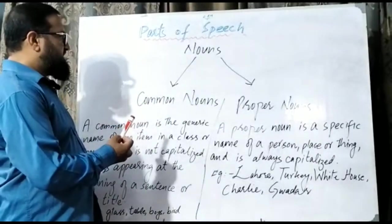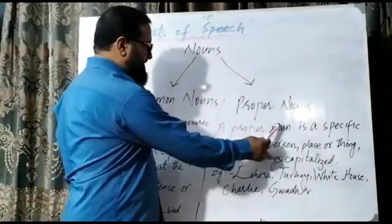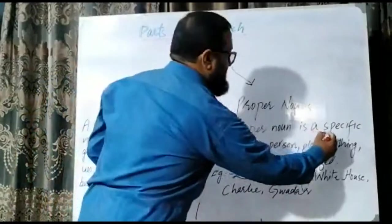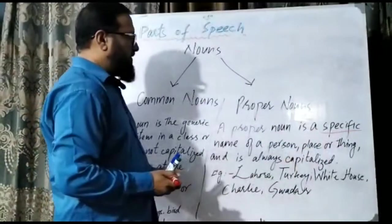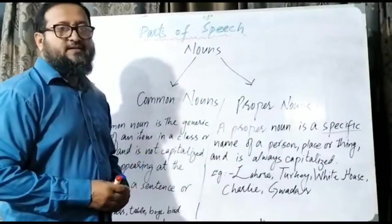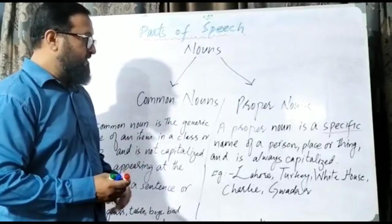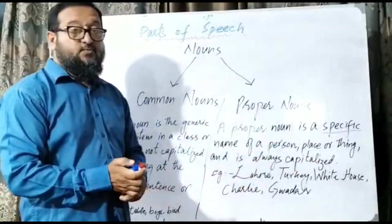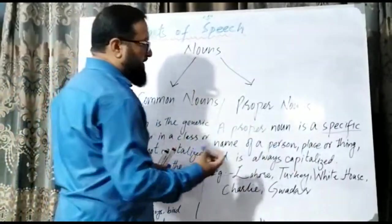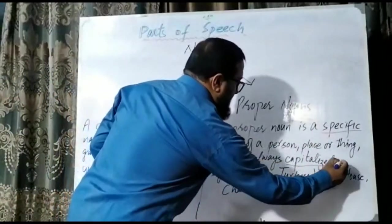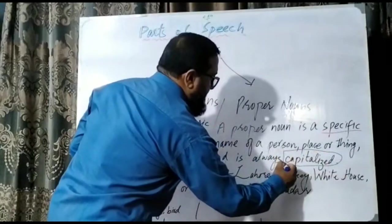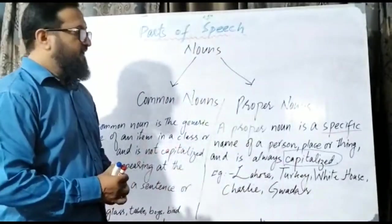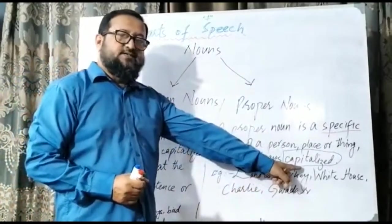Let's see the proper nouns first. A proper noun is a specific name of a person, place, or thing. And it is always capitalized — that is most important. Whether it is in the beginning, in the middle, or at the end, anywhere it is placed, it should be capitalized. So this is called the proper noun.